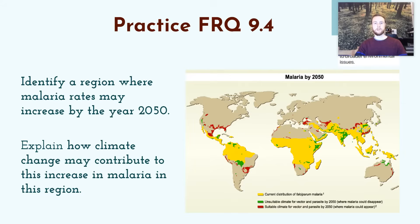For practice FRQ 9.4, we look at a map of the projected range of malaria by the year 2050. Yellow shows the current distribution of the malaria-carrying mosquito species; green indicates areas that will become unsuitable for malaria by 2050; red marks areas that will become suitable for malaria by 2050. Identify a region on Earth where malaria rates may increase by 2050, and explain how climate change may contribute to this increase in that region.